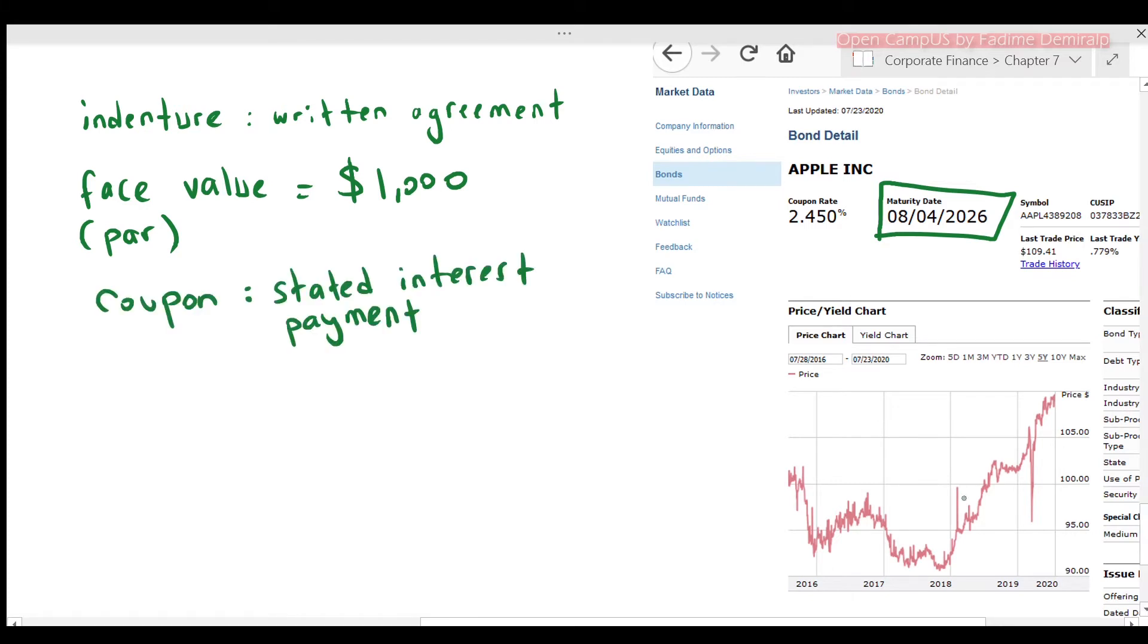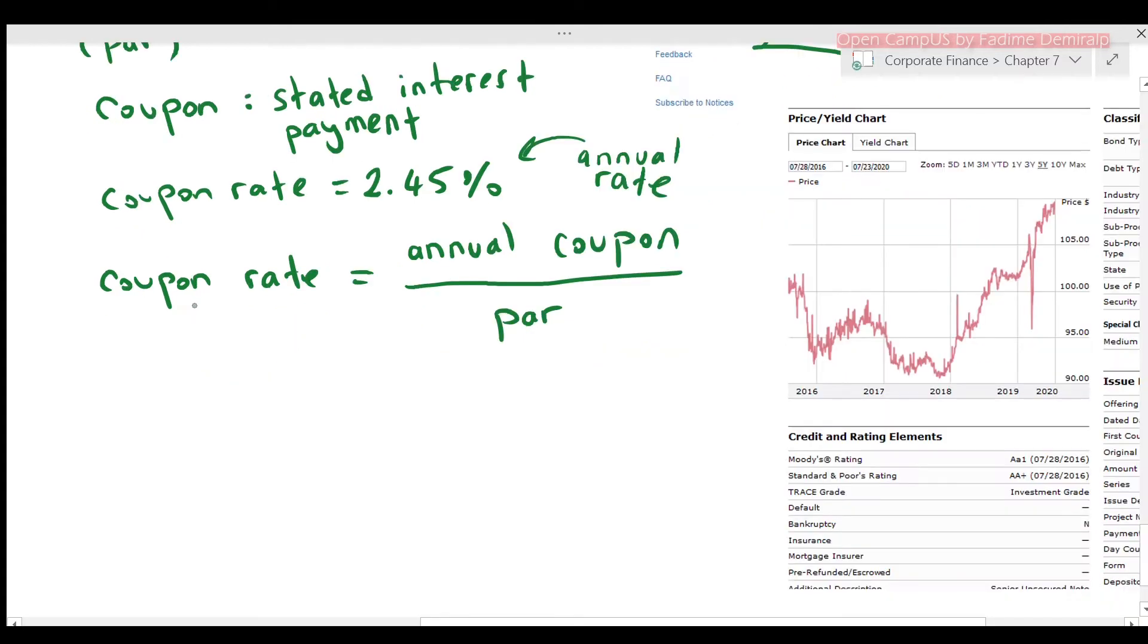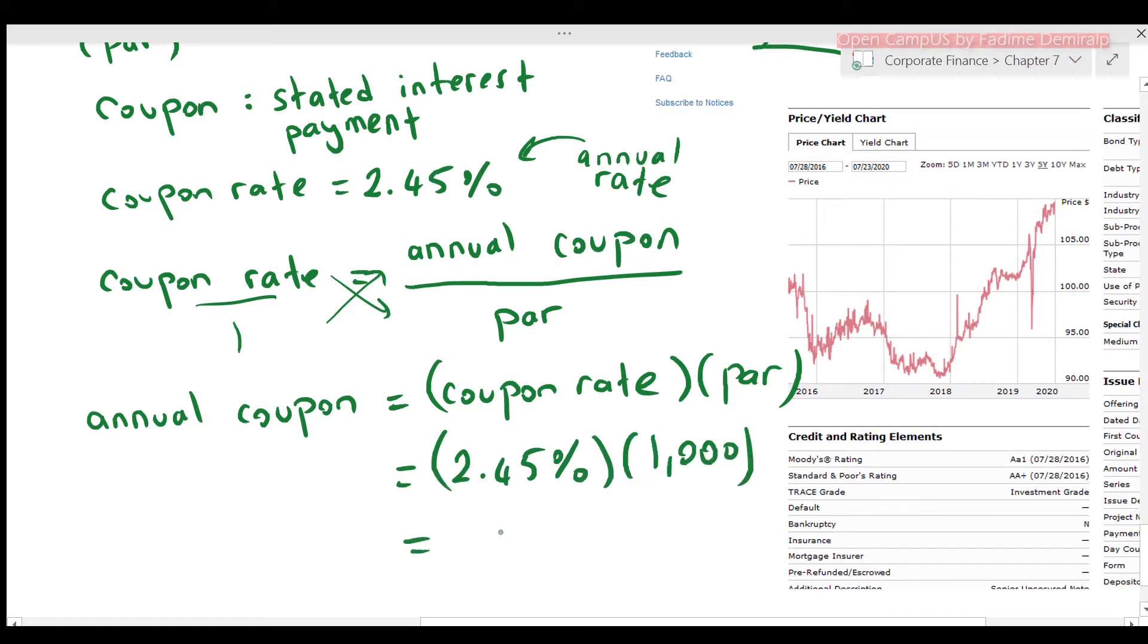We don't see the coupon in bond detail, but we see coupon rate here. This rate is an annual rate. Remember by law, interest rate has to be disclosed as an annual rate. Coupon rate is the ratio of annual coupon and par value. Or you can write annual coupon equals coupon rate times par. In this example, coupon rate is 2.45%, par is 1,000. Therefore, annual coupon is $24.50.